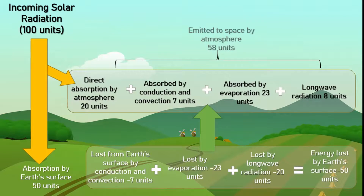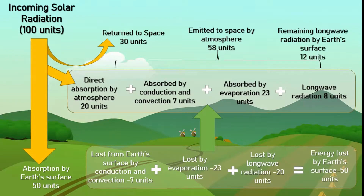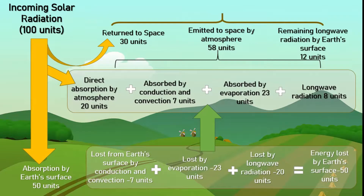However, it happens over a long time and some energy is always in reserve to maintain earth's temperature. Other than these 58 units, 30 units are already reflected back to space, and the remaining 12 units are directly emitted to space from earth's surface. So all 100 units are returned back to space.